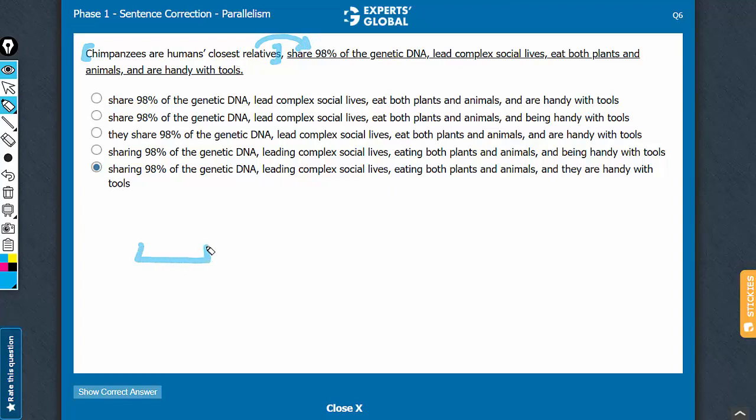So, a main clause here, followed by subordinate phrases. How many? 1, 2, 3, and 4: a, b, c, and d.